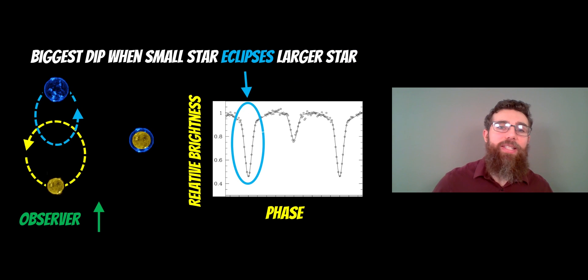The biggest dip is when the smallest star then eclipses the larger star. You get the primary transit then. So as viewed from Earth, the smaller star passes in front of the brighter, bigger star and we get our primary eclipse there.